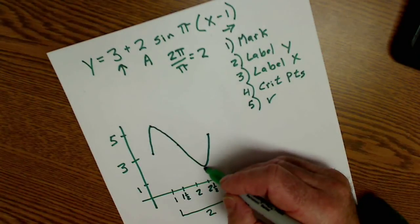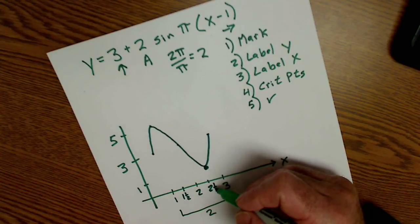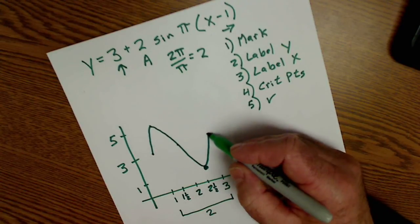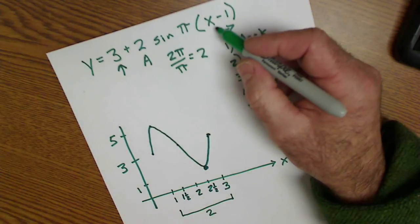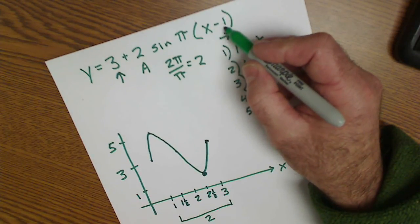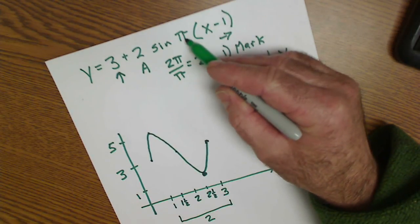And then let's pick a point like this one right here. We find one that's an integer like 3. So if I pick 3, I plug it in here. 3 minus 1 is 2, times π is 2π.